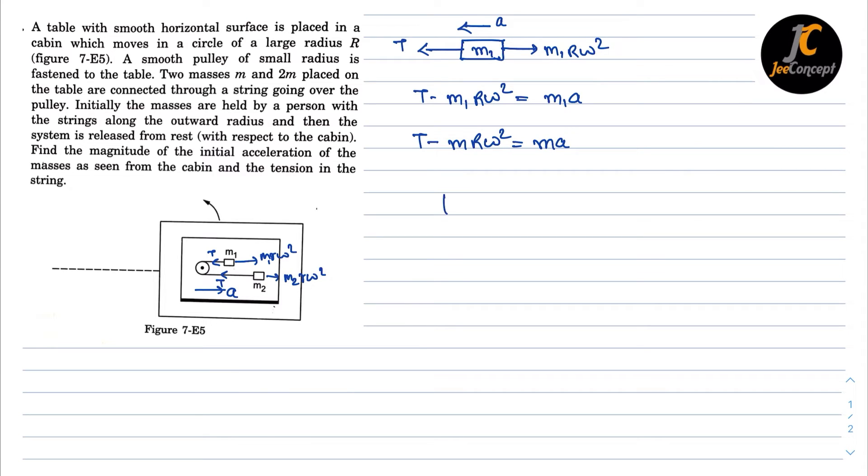Similarly, FBD of the other one is M2. The M2 R omega square will act in the outward direction. Tension will be in the left hand side direction and the acceleration is in the right hand direction. So then I can write M2 R omega square minus T is equal to M2 into A. The value of M2 is 2M, so 2M R omega square minus T is equal to 2M into A.